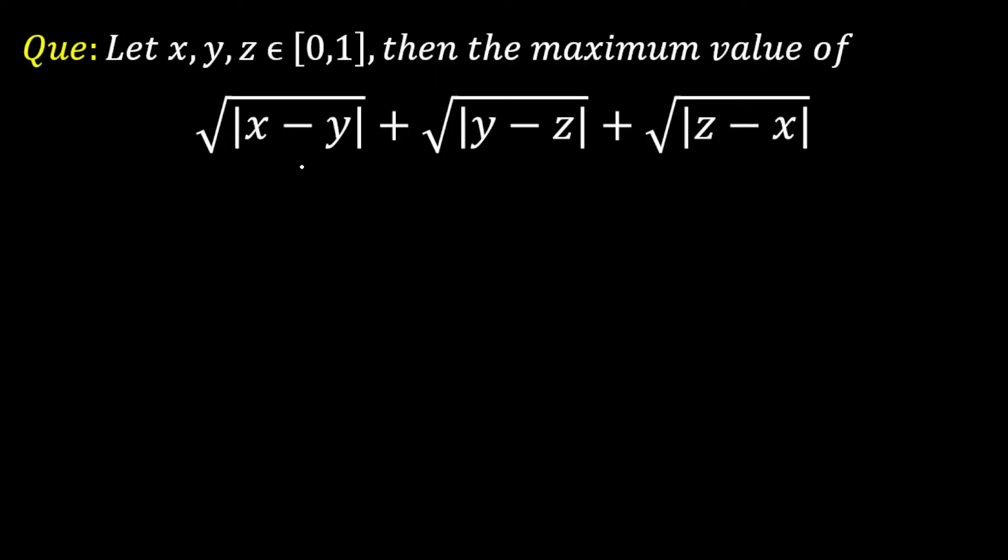Now the given expression is in the form of three variables as you can see x, y, z and within the given mod and root over is taken here. So first of all, in which interval the root over is defined? Root over will be defined for any value of x, y, z because mod is here. So mod will ensure no negative value comes inside.